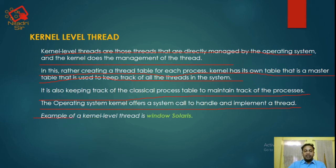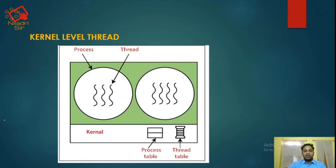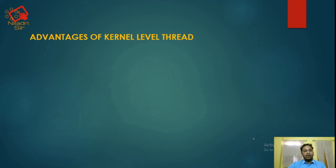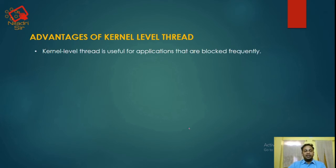An example of a kernel-level thread is Windows threads. This is the pictorial representation of kernel-level threads. You can see the whole process with three threads within it. There is another process which consists of four threads. This is the kernel, the process table, and the thread table for kernel-level threads.